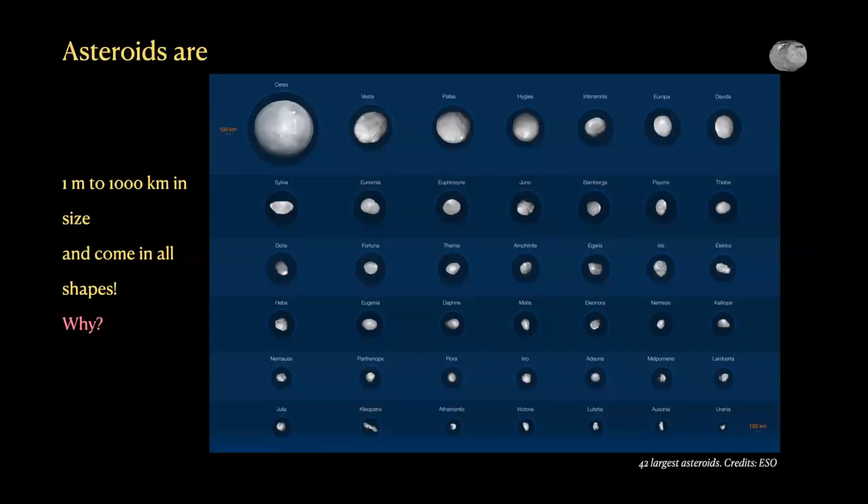Asteroids can be of various sizes — these are leftover rocks. They can be as small as one meter or as big as a few hundred reaching to almost a thousand kilometers. They come in all shapes. These are the 42 largest asteroids imaged by the Very Large Telescope in Chile. You can make out that the shapes are very different. Why do you think the shapes are different? Why aren't they all spherical?